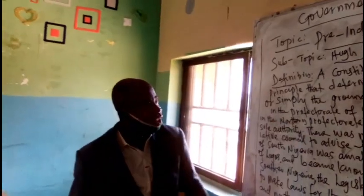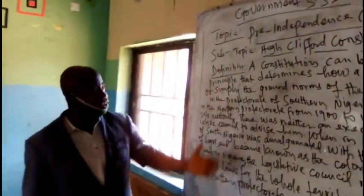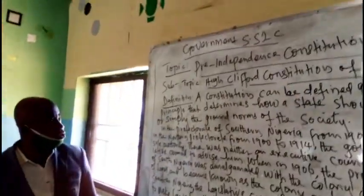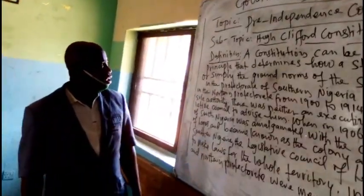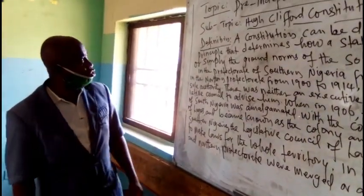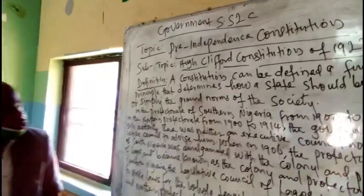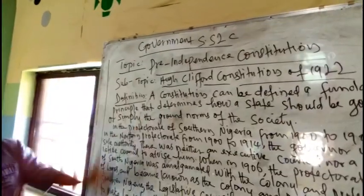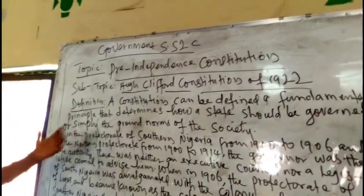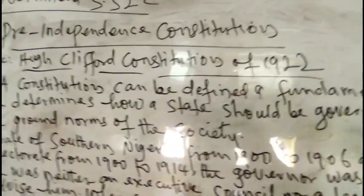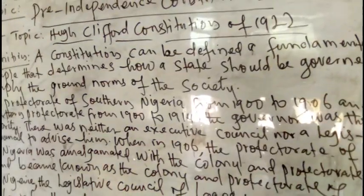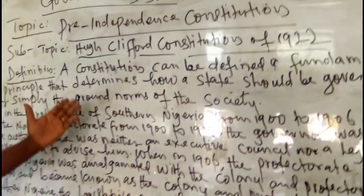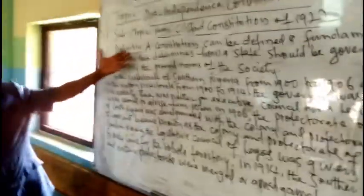As they came to colonize Nigeria, they came with their own way of duties. As human beings, there must be ground norms for the society on how to govern the country. So the first constitution of this kind is called the Clifford Constitution of 1922. A constitution can be defined as a fundamental principle that determines how a state should be governed, or simply, the ground norms of the society.